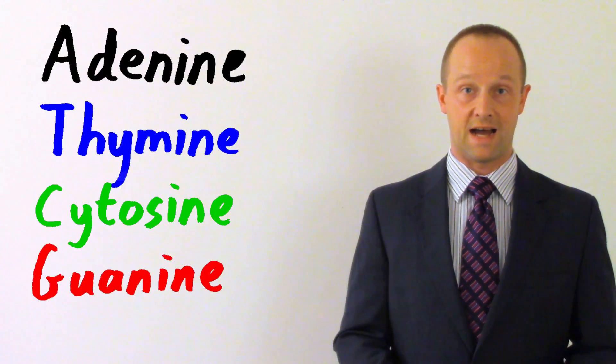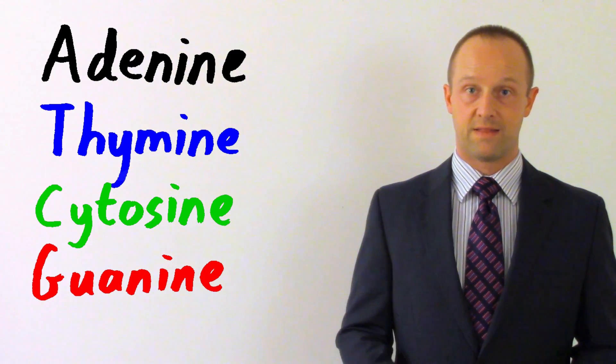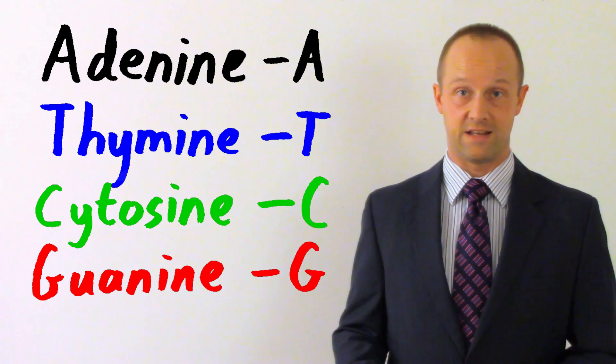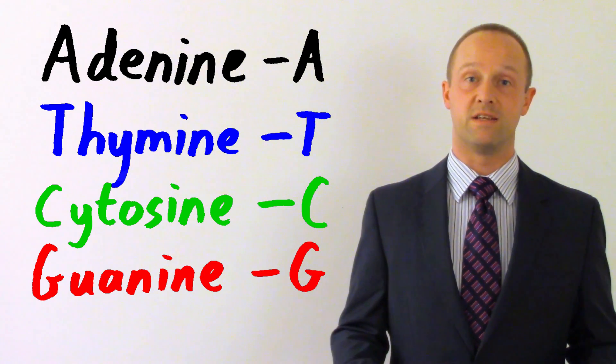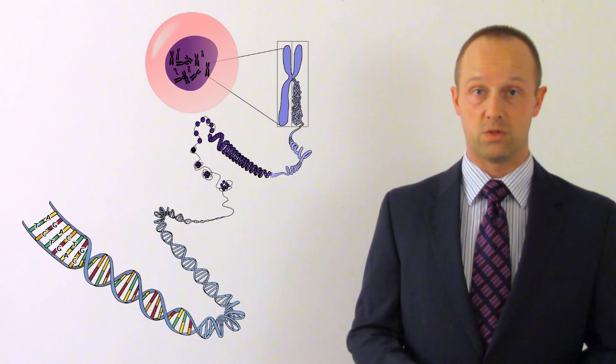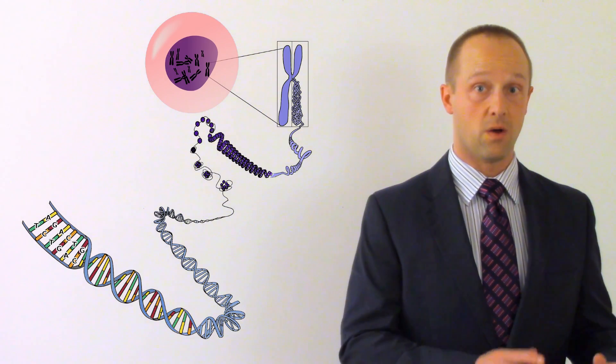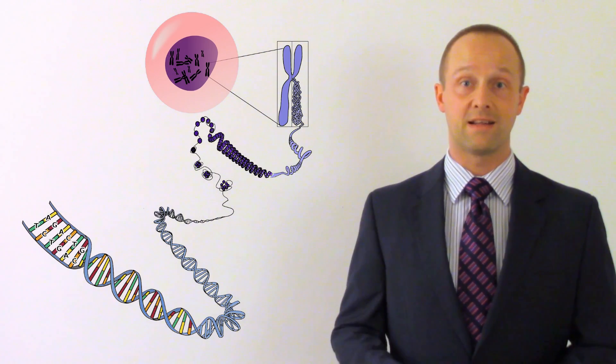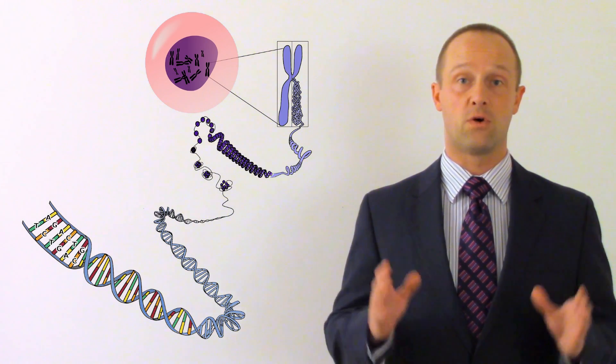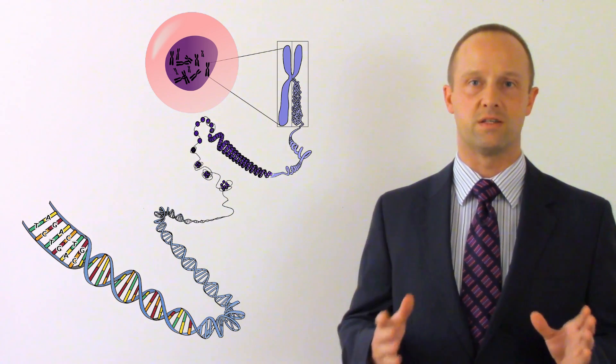Those four are adenine, cytosine, guanine, and thymine. They're normally simplified to A, C, G, and T. That just makes it a little bit easier to represent them on a diagram like this. Now each one of those will only stick to a very specific other one. So adenine and thymine always stick to each other. They always form either half of one of those rungs of our twisted ladder, our double helix.